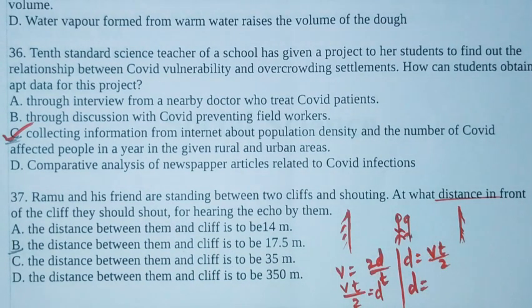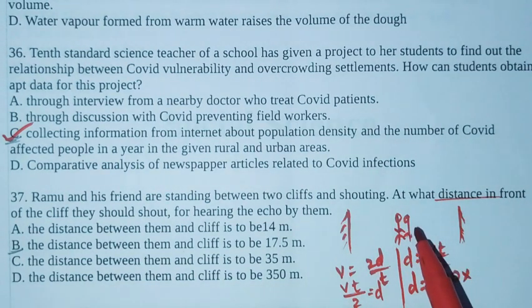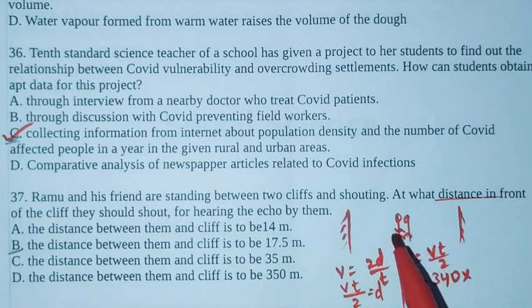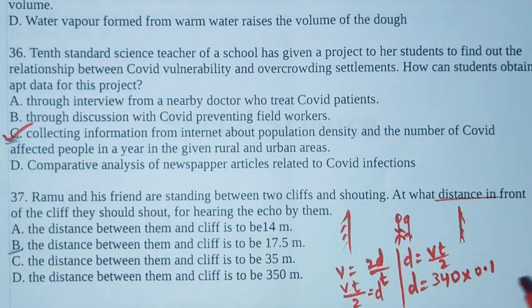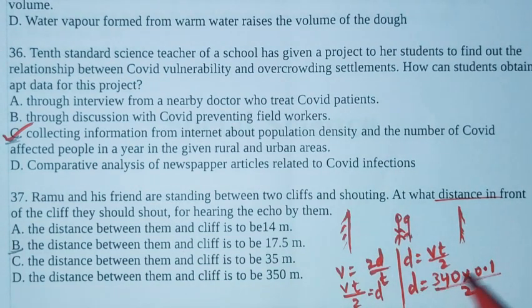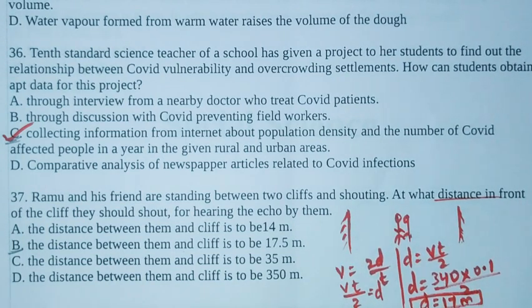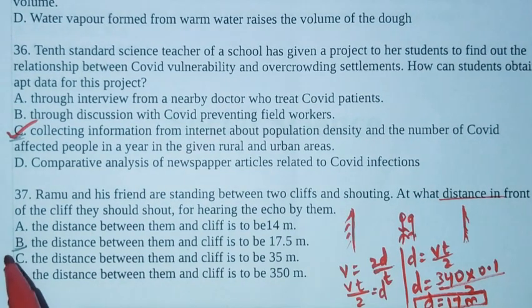d equals vt by 2. What is v? v is velocity of sound in air, approximately 340. t is persistence of air, approximately 0.1. So d equals 340 into 0.1 divided by 2, which equals 17. Unit of distance is meter, so 17 meter.